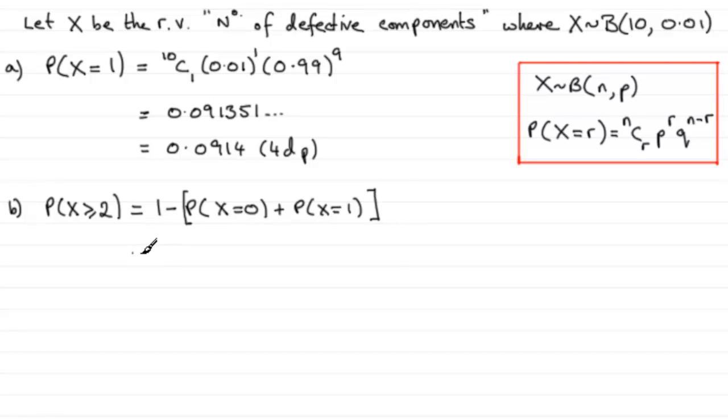Now that means that we need to use the formula here for each of those probabilities. So probability that x equals 0 is going to be 10C0.